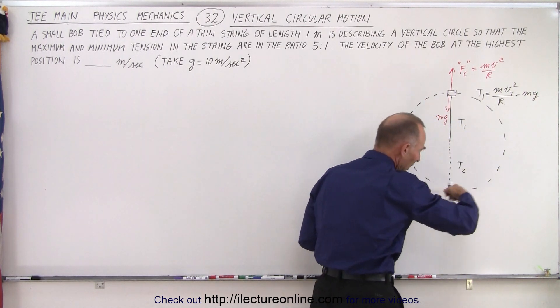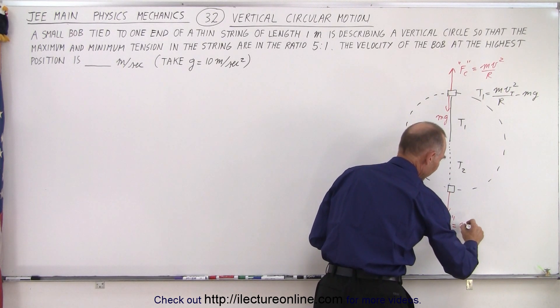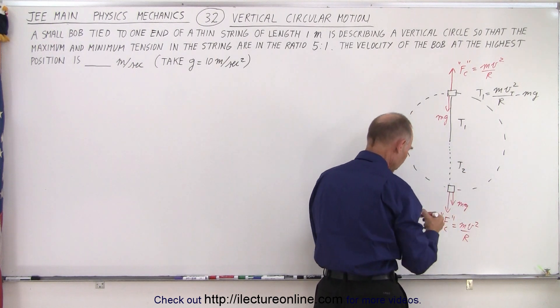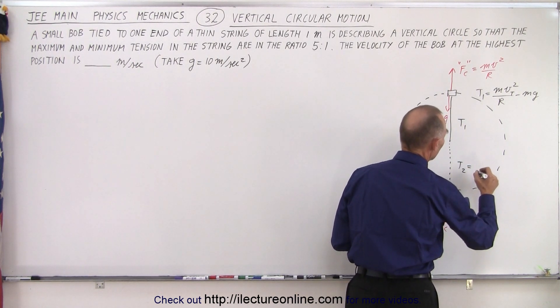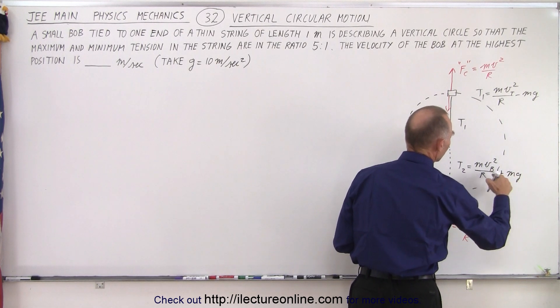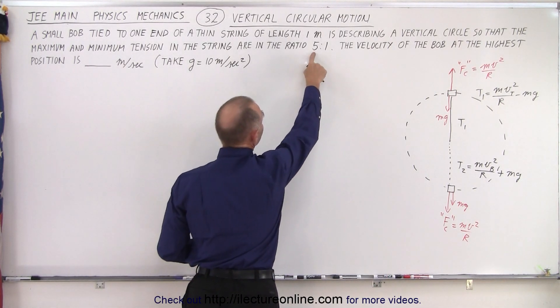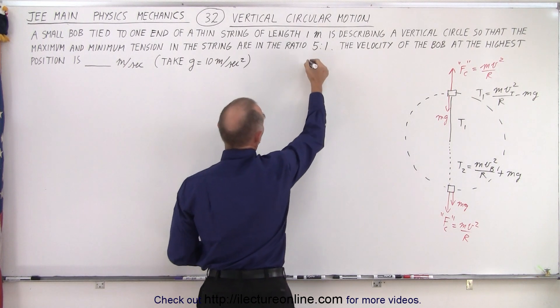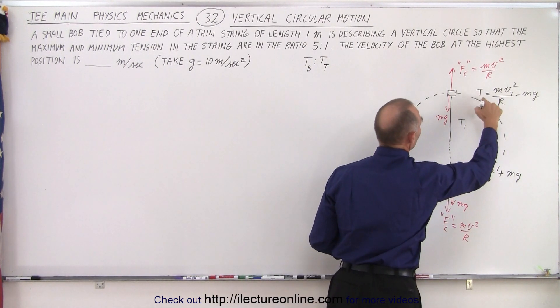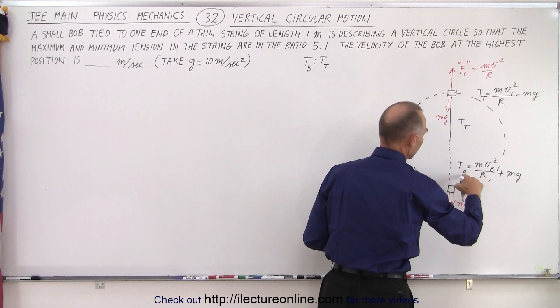But then when it comes to the bottom, notice that both the centrifugal force, that fictitious force f sub c, centrifugal force equals mv squared over r, and the weight of the object mg both point downwards. In this case, the tension at the bottom is equal to mv at the bottom squared over r plus mg. So it's greater at the bottom than at the top. So when we're talking about the relative ratio, that would be t at the bottom divided by t at the top. So basically t bottom related to t at the top, and so instead of 2 maybe I'll call it bottom and instead of 1 I'll call it top.